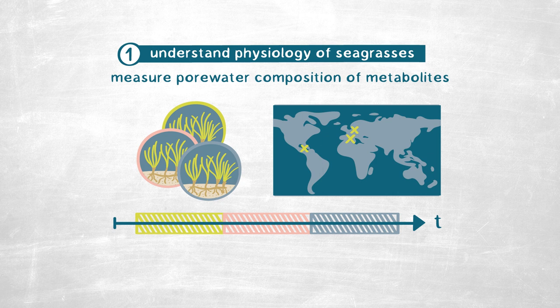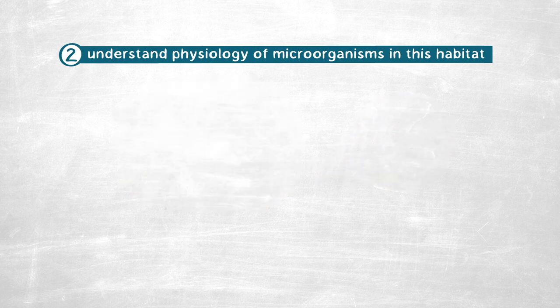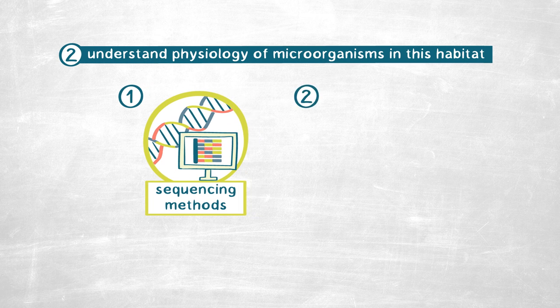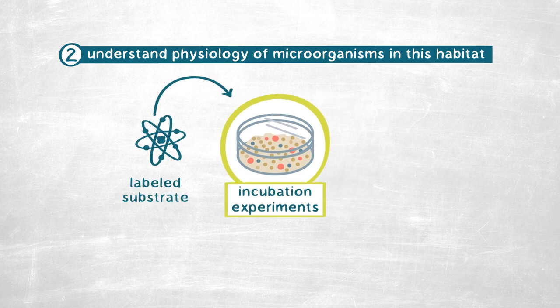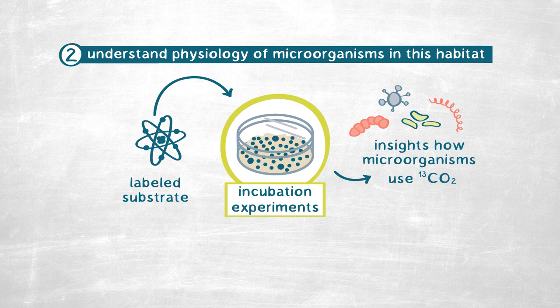After understanding more about the physiology of the seagrasses and what they could be excreting into the environment, we needed to understand the physiology of the microorganisms occurring in this habitat. You can do this with two different approaches. The first is based on sequencing methods — collecting DNA and RNA for metagenomic and metatranscriptomic analyses — which gives you the genomes of individual bacteria or archaea living in the sediments and helps you understand what they're doing there. The second method is sediment incubation experiments where you introduce labeled substrates and monitor for the production of 13CO2, giving insight into how quickly microorganisms use the labeled substrate and the actual physiology of the microbes present.